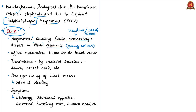This virus attacks endothelial tissue, found inside blood vessels. There are many strains; most deaths in Asian elephants are associated with the virus strain Elephant Endotheliotropic Herpes Virus 1A. Other fatal strains observed in Asian elephants are 1B, V3, V4 and V5.